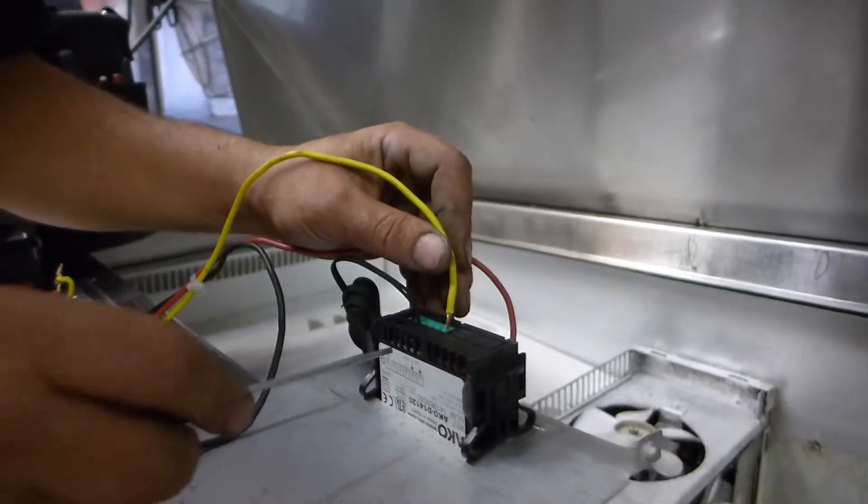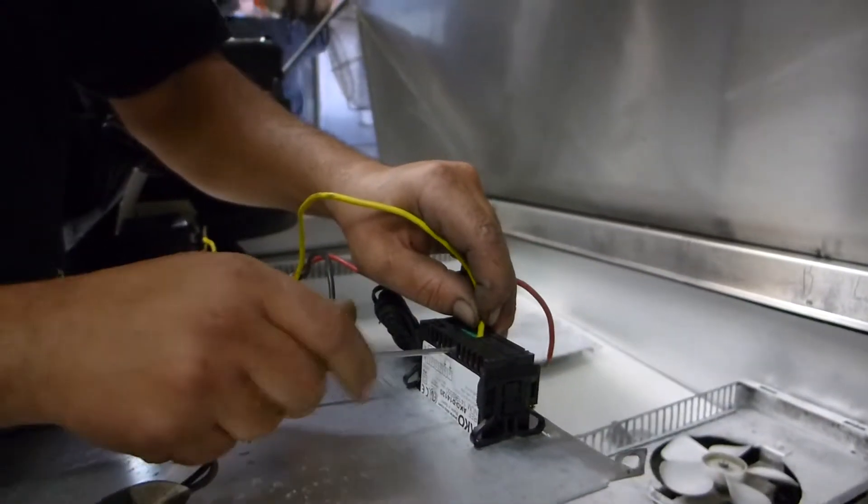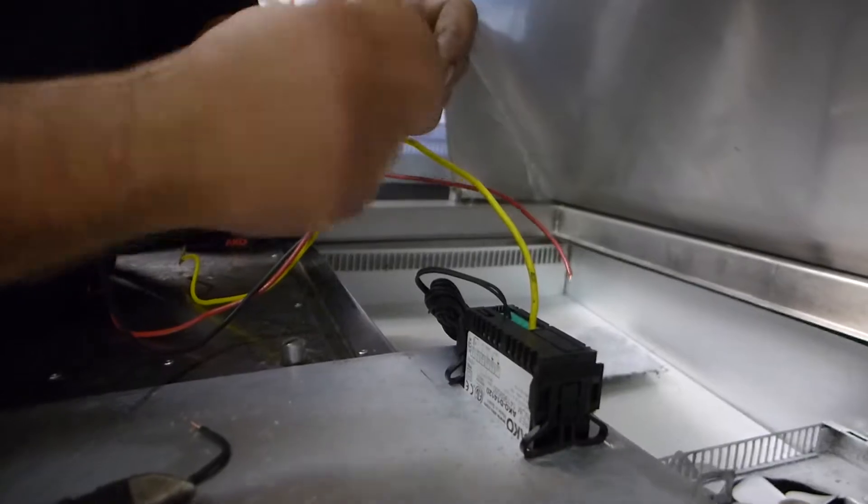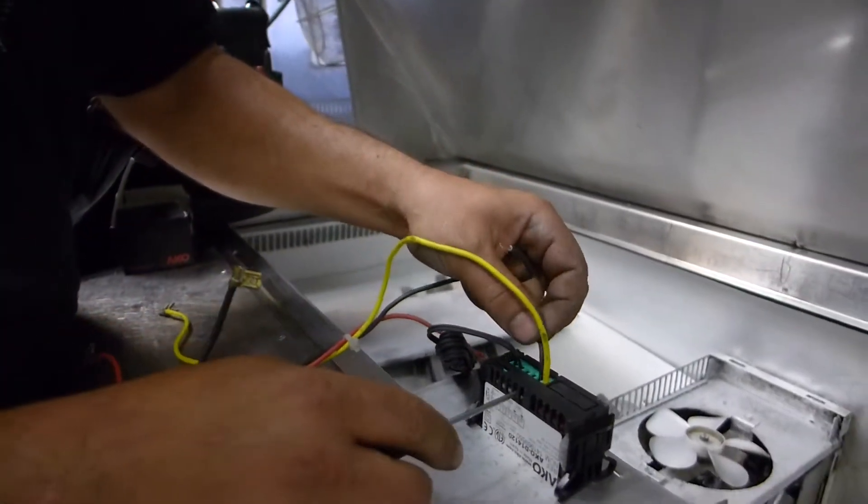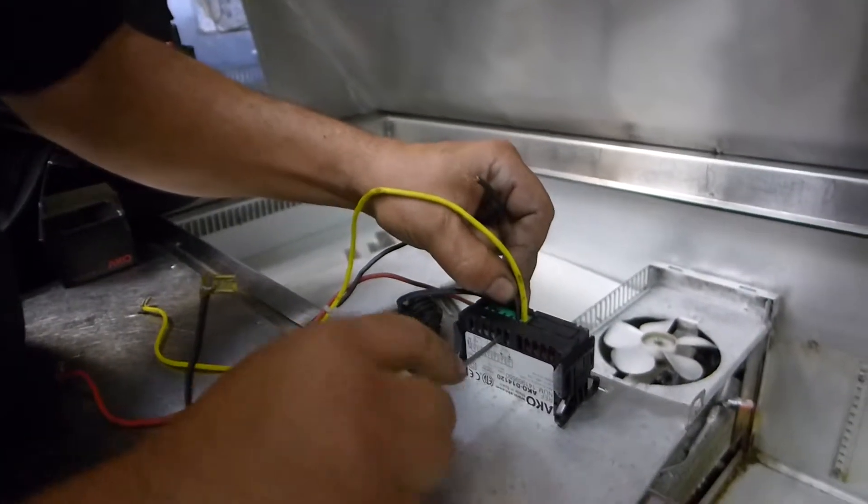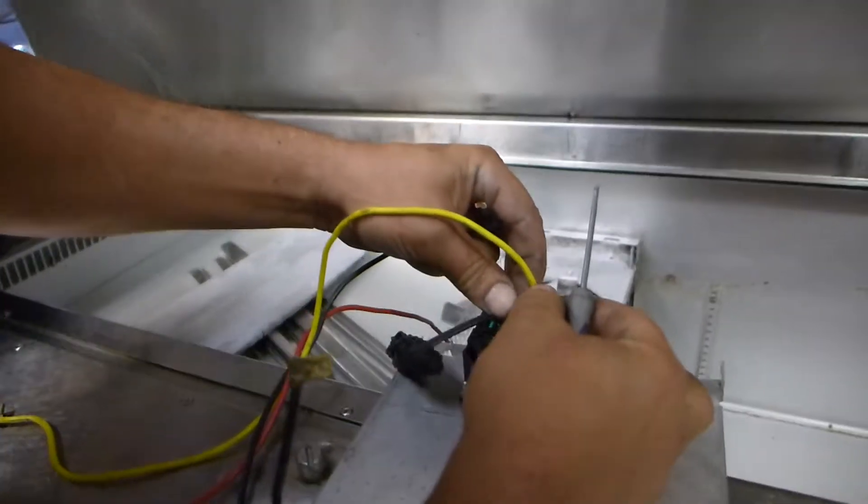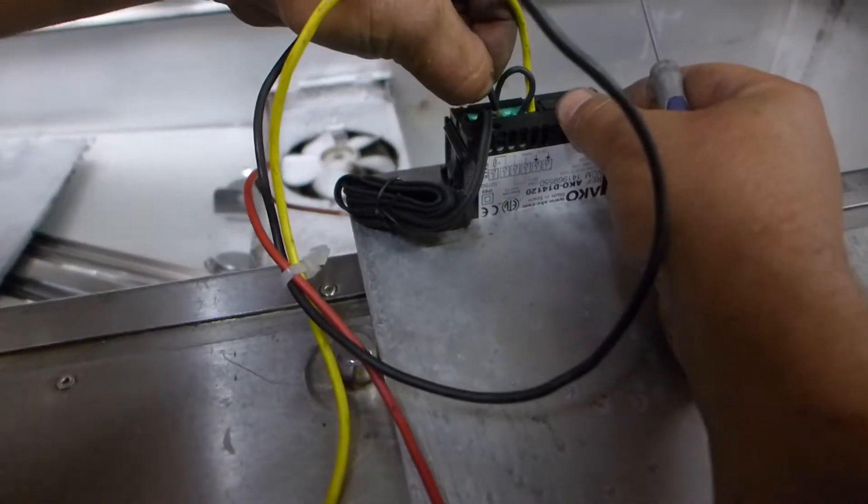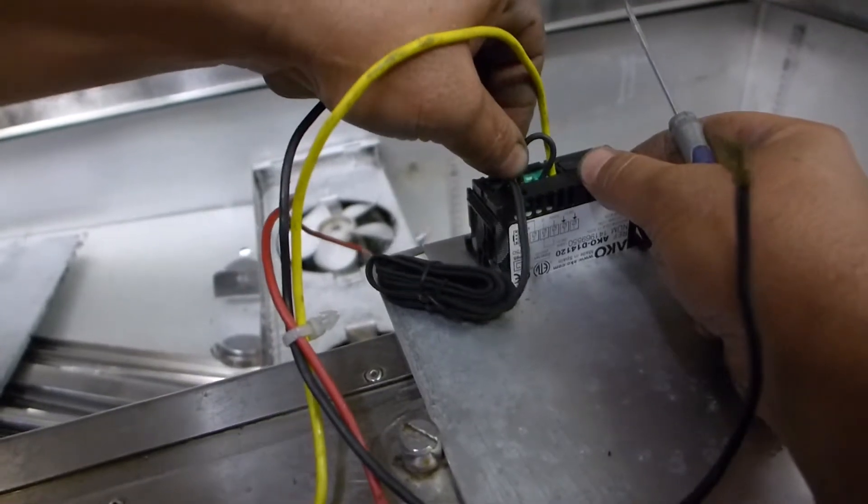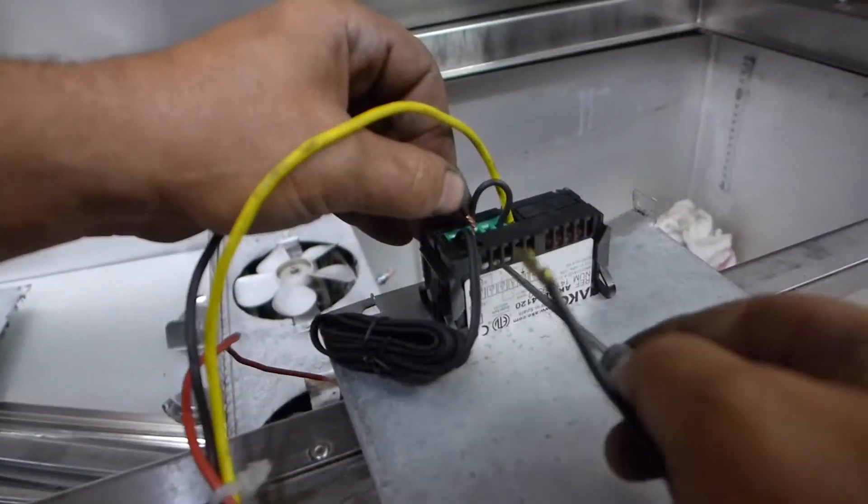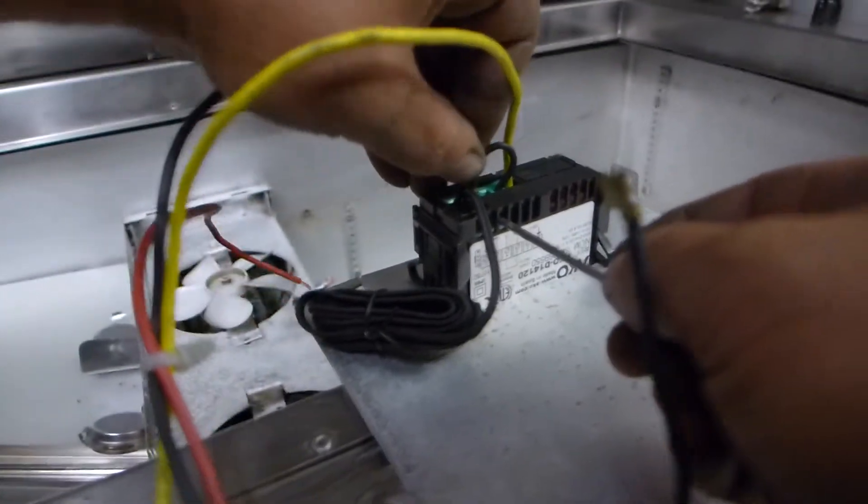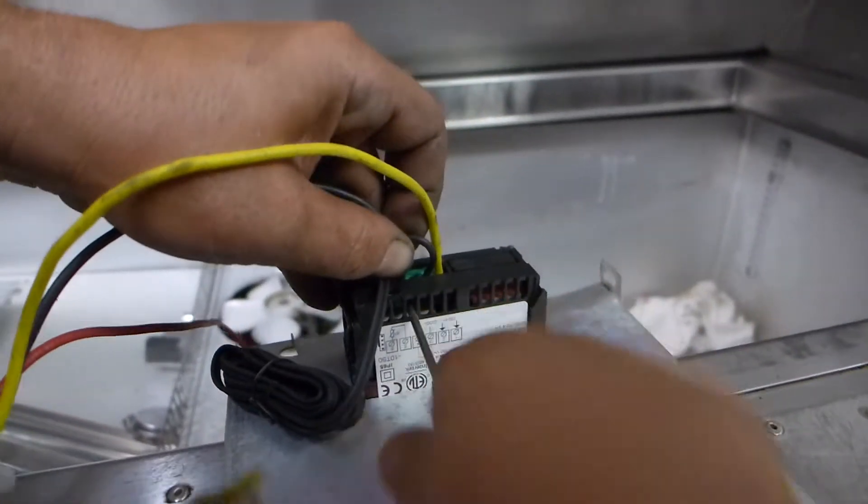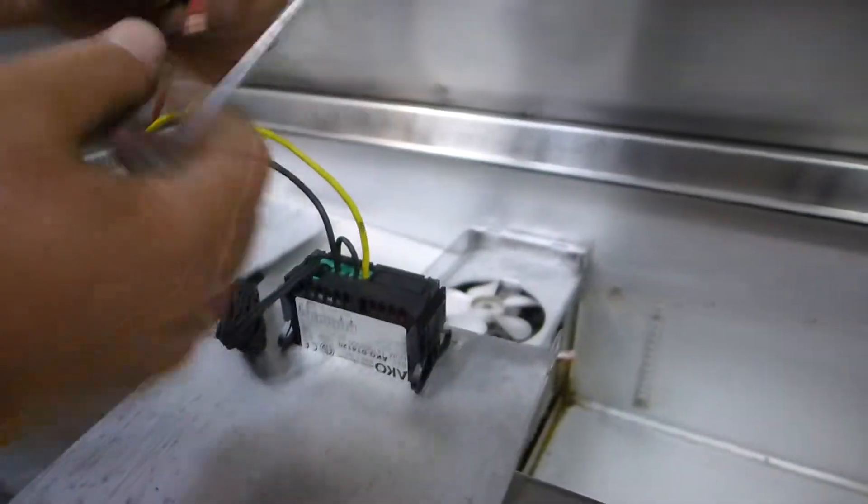I'm going to wire it in neutral. This is the phase with the jump to the compressor. On the common, and the last one is for the compressor.